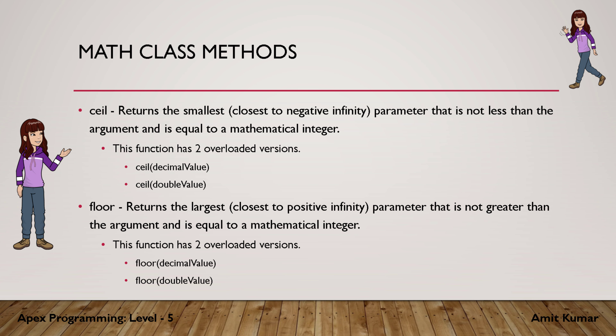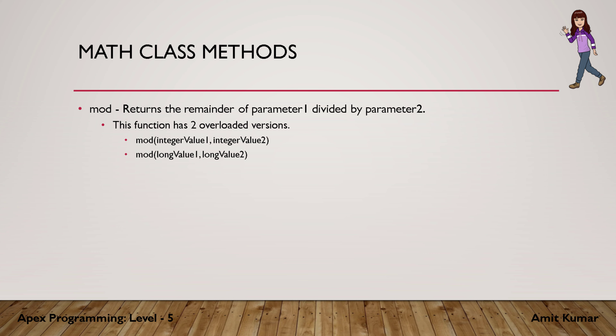floor is the complementary of ceil. If ceil returns 5.0 for 4.5, floor is going to return 4. So ceil gives you a value greater than the current value, and floor returns the value less than the current value passed as parameter.